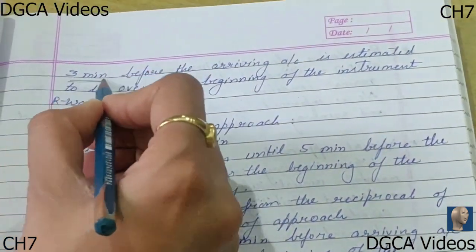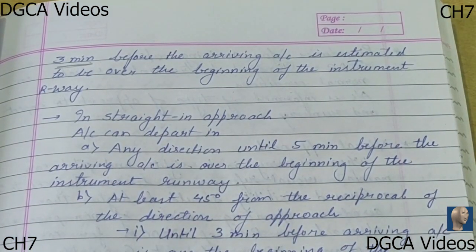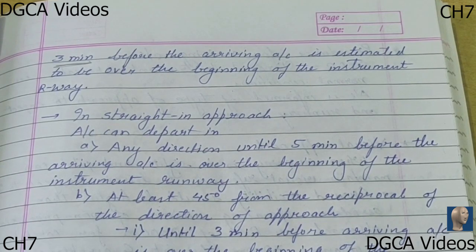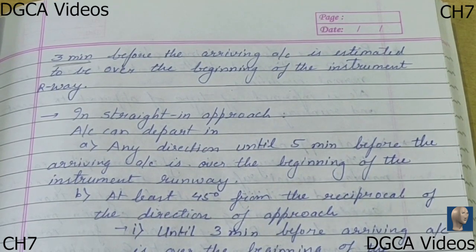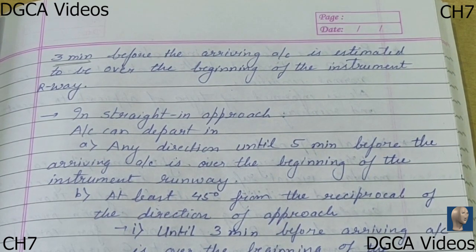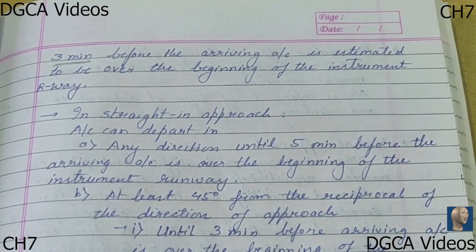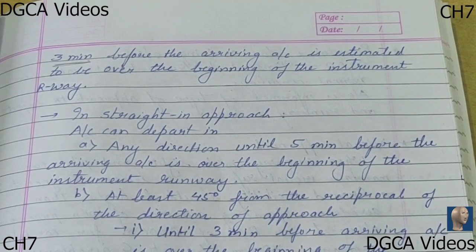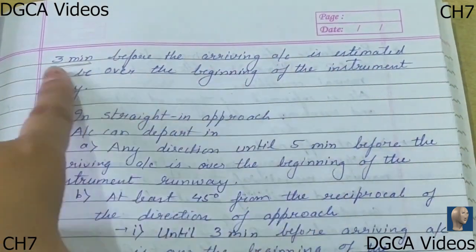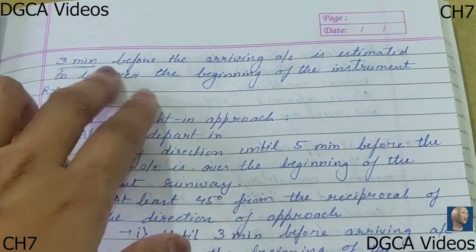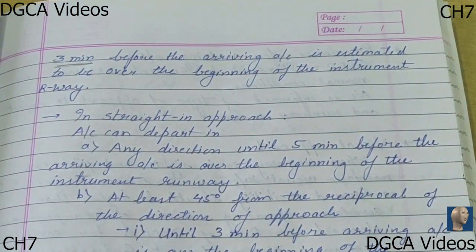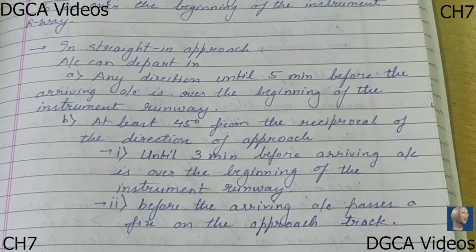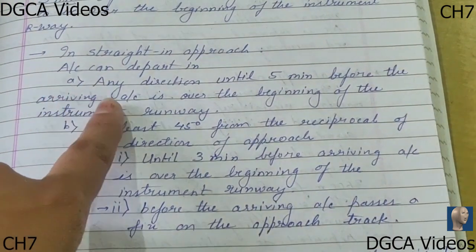So we talked about two different points. In the case where the landing aircraft is using an instrument approach: first, the departing aircraft can depart in any direction until the arriving aircraft has started its procedure turn for the final approach; and second, except for the 45-degree direction from the reciprocal of the approach, the aircraft can take off in any direction provided that the arriving aircraft is estimated to be over the beginning of the instrument runway and three minutes of separation is maintained.